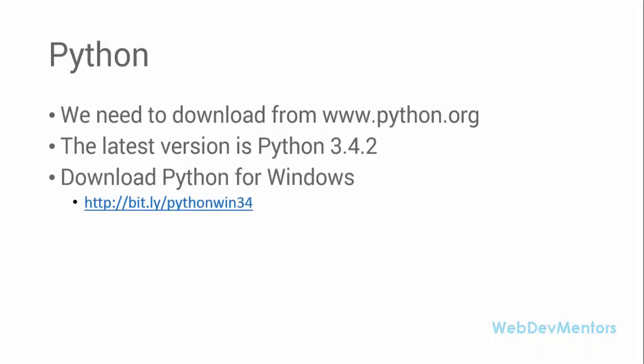The link for downloading Python for Windows is bit.ly/pythonwin34. I've made a short link using bit.ly so you can use that. It's once again bit.ly/pythonwin34.